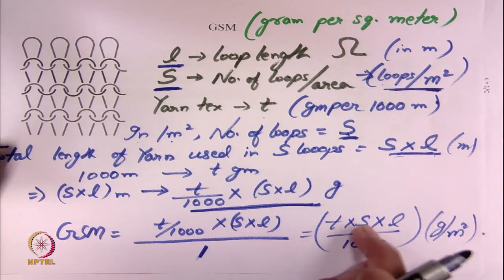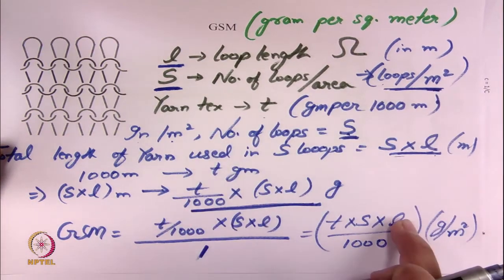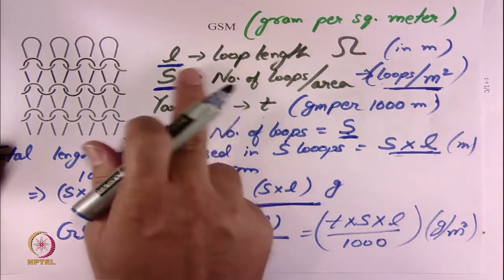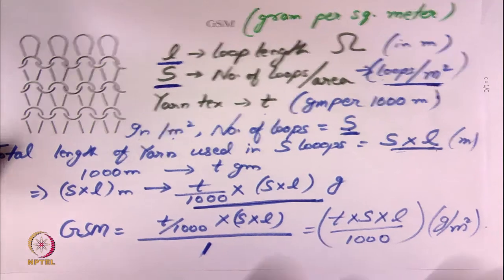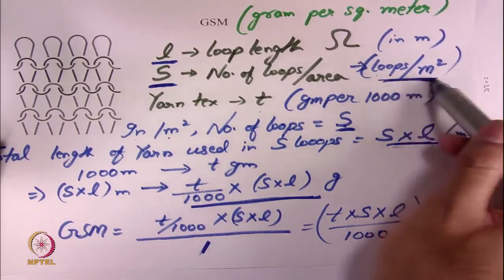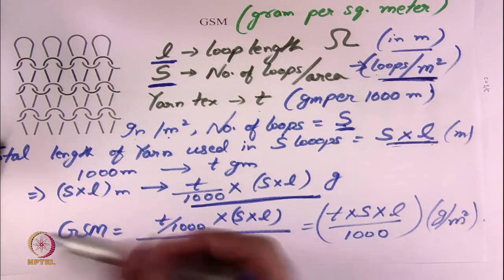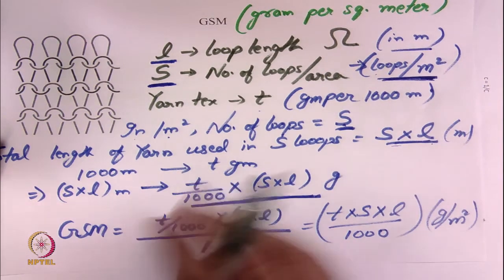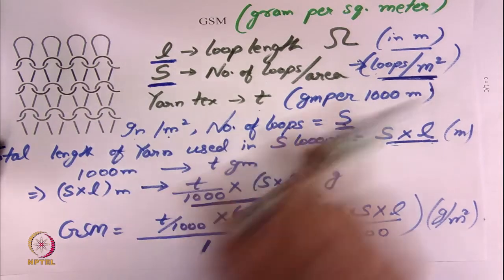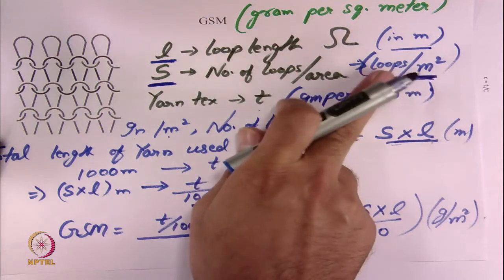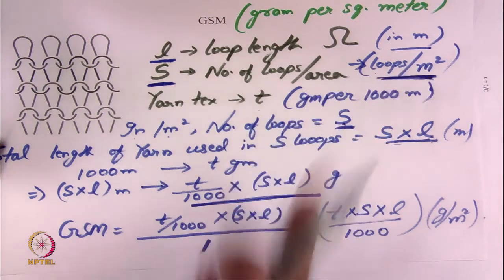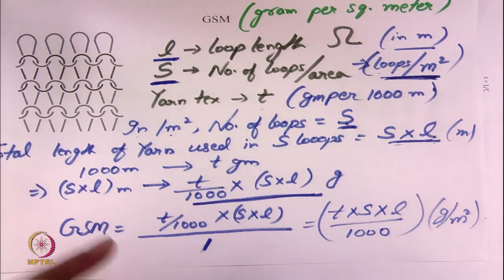So T is the yarn tex, S is the number of loops per meter square, L is the loop length, and 1000 is just the unit factor. You need to be very, very careful how you are calculating the loops, what is the unit of loop length, and what is the unit of S. If you are calculating number of loops per inch square, you need to convert S into loops per meter square and then use this formula. Units are extremely important.